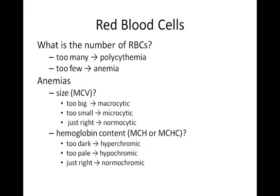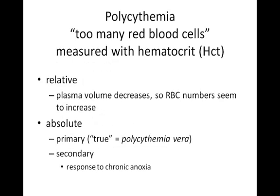MCH is independent of cell size, while MCHC is dependent upon it. Returning to polycythemia — too many red blood cells — there are two types. Relative polycythemia occurs when the volume of plasma decreases, leaving the red blood cells packed more tightly than normal in the blood; this can happen in dehydration, for example. Absolute polycythemia is when the volume of the blood is normal but the number of cells is too high. This can be primary, called polycythemia vera, or secondary due to an adaptation to chronic anoxia.